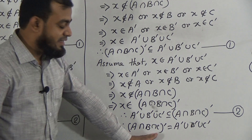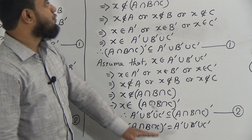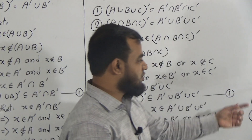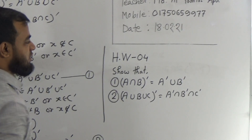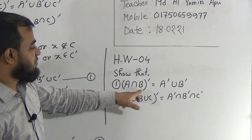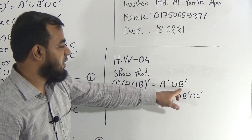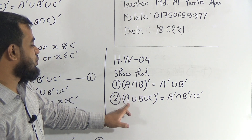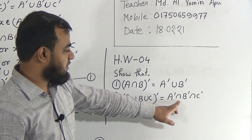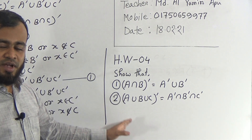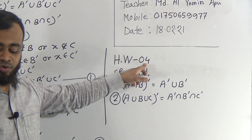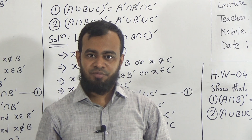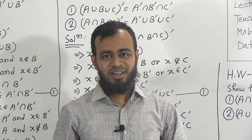This completes the proof of the extended formula of De Morgan's Law. I proved proposition two. You must prove proposition one. Your homework number is four. Show that: number one — A intersection B whole prime equals A prime union B prime, and number two — A union B union C whole prime equals A prime intersection B prime intersection C prime. Please keep practicing more at home. See you again, inshallah. Allah Hafiz.